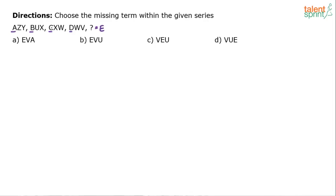It goes in the rhythm, right? A, B, C, D, E. So the answer should start with E. Option A is possible, option B is possible. C and D are ruled out because these options start with V.